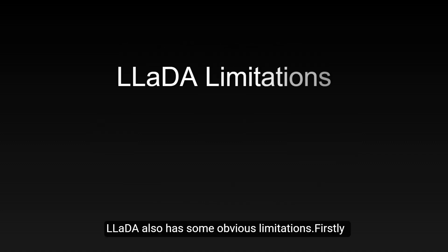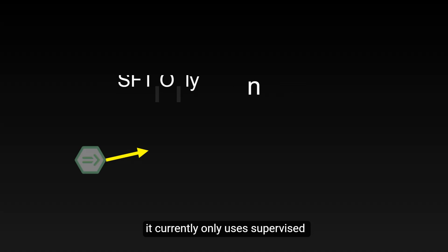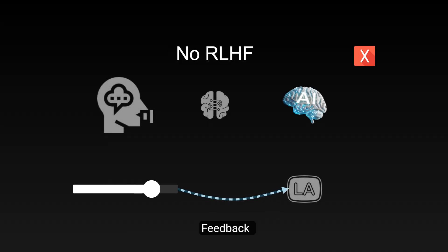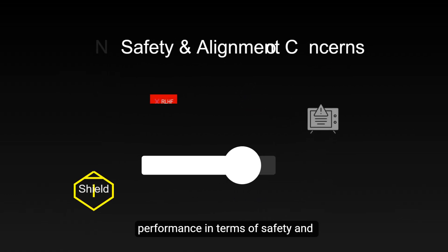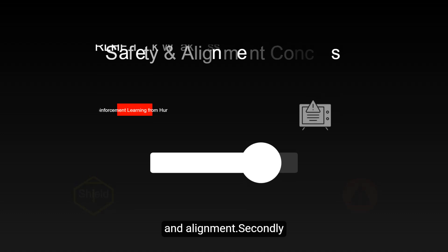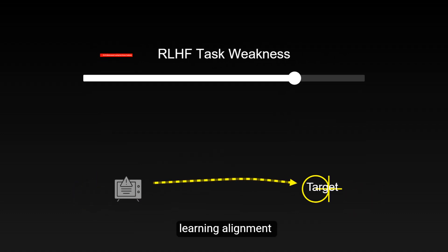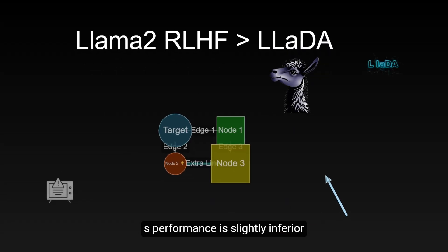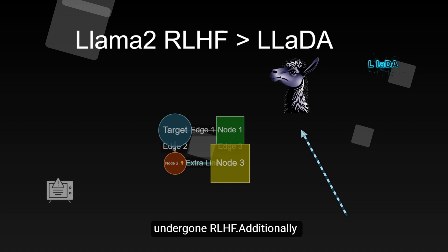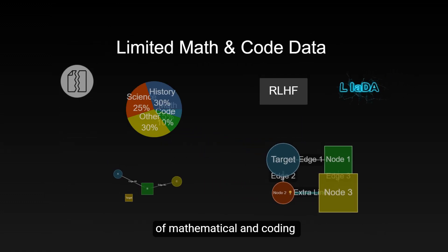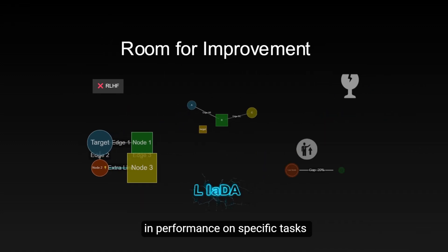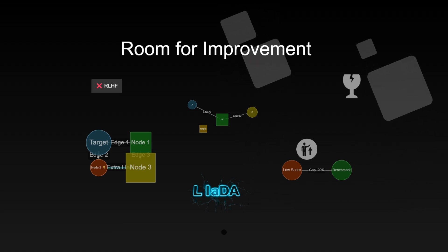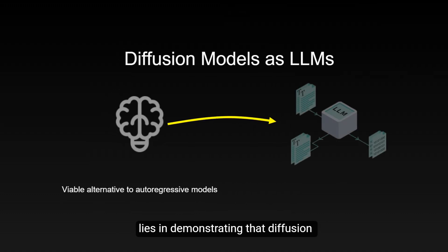Of course, LIDA also has some obvious limitations. Firstly, it currently only uses supervised fine-tuning (SFT) and has not undergone RLHF (reinforcement learning from human feedback) alignment like other mainstream models, which may result in insufficient performance in terms of safety and alignment. Secondly, on tasks that require reinforcement learning, such as MT-Bench dialogue evaluation and TruthfulQA truthfulness evaluation, LIDA's performance is slightly inferior to models like LLaMA 2 that have undergone RLHF. Additionally, due to the relatively low proportion of mathematical and coding tasks in the training data, there is still room for improvement on tasks such as GSM-8K and HumanEval.